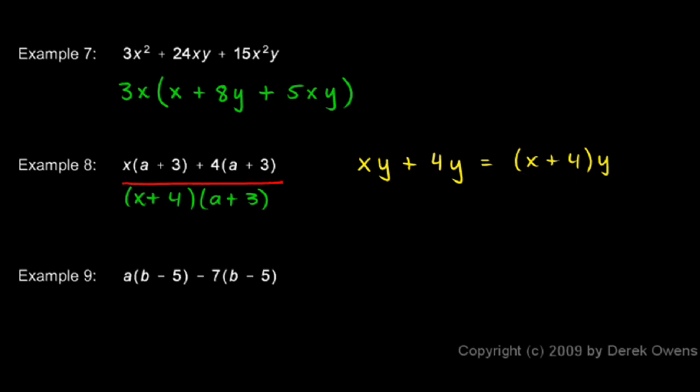This problem is the same thing. Just instead of x times y and 4 times y, we have x times a plus 3 and 4 times a plus 3. So instead of the y getting factored out here on the right, the a plus 3 got factored out there. So x times a plus 3 plus 4 times a plus 3 gives us x plus 4 times a plus 3.